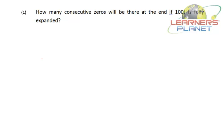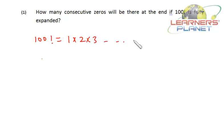Now let's see the first question: how many zeros will be there at the end if 100 factorial is fully expanded? We have to calculate how many consecutive zeros will be there at the end of 100 factorial. 100 factorial is the product of numbers from 1 to 100 — it is 1 × 2 × 3 all the way till 100. Now, how do we get a zero? We get a zero from a 5 and 2 combination.